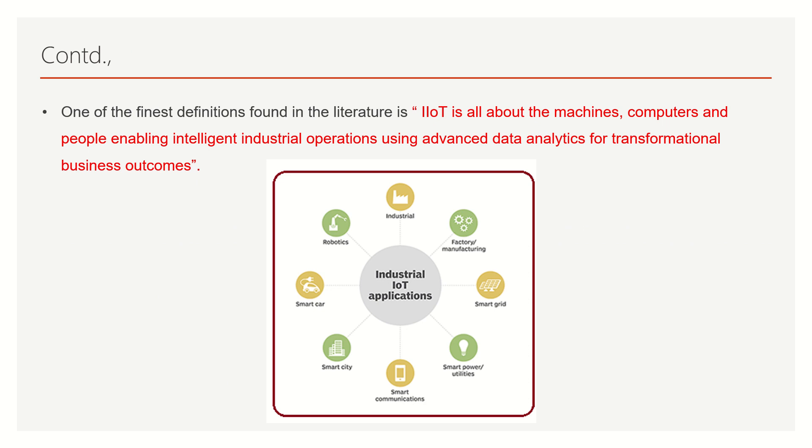One of the finest definitions I found in the literature: IoT is all about machines, computers, and people enabling intelligent industrial operations using advanced data analytics for transformational business outcomes. The word 'transformational' is most important — transformational business outcome is what is targeted through IoT. IoT applications span industrial factory manufacturing, smart grid, smart power, smart communication, smart city, robotics, and more. Wherever you manufacture something, you can make it Industrial IoT.